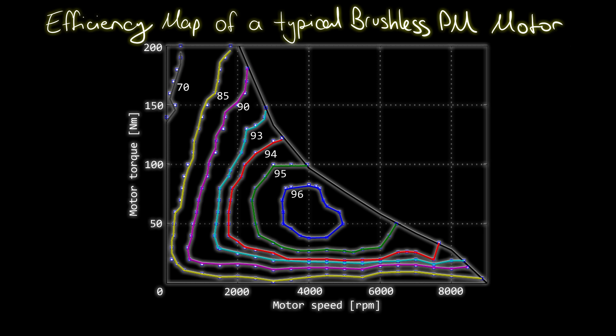When we look at an efficiency curve of a normal motor used in an electric vehicle, in this case, we assume that it's a brushless permanent magnet AC motor. We can see that at very low speeds and high torque requirements, and at higher speeds, the motor is not as efficient as in the middle region.